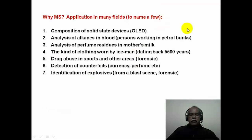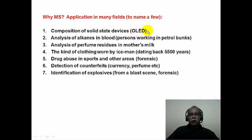Why is mass spectrometry such a popular technique? It is very sensitive — one needs only femtomolar or picomolar quantities of analyte to obtain a mass spectrum. It is widely applied in many areas of research. For example, organic light-emitting diode devices have very thin layers of substrate at microgram or picogram levels, which can be directly introduced into the mass spectrometer and analyzed. Persons working at petrol stations may inhale large amounts of alkanes; mass spectrometry is used to analyze these alkanes in their blood stream from a health monitoring perspective.